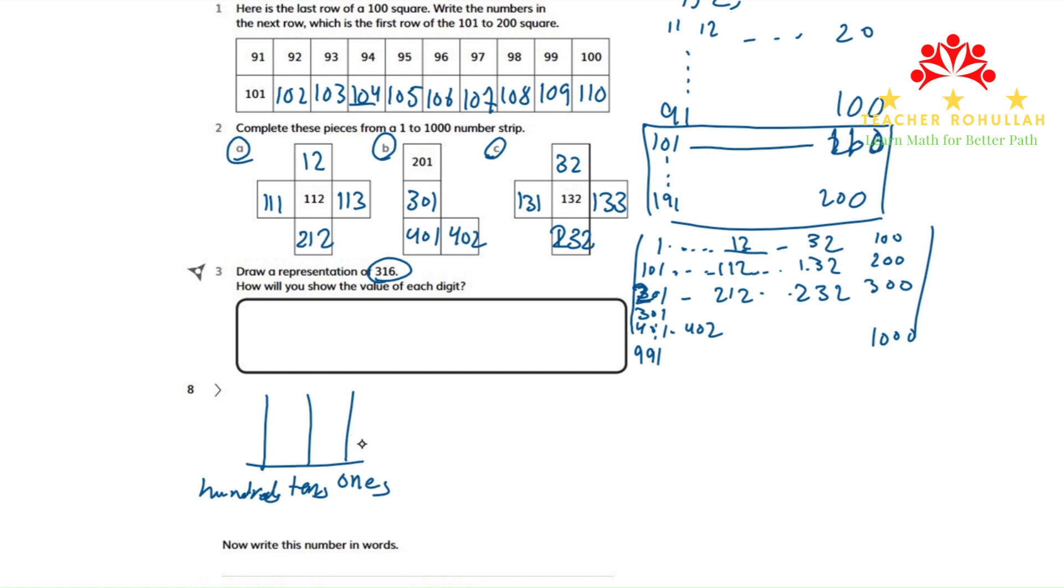Okay, let's start with the ones. What number do we have in the ones place? We have six. So we can draw six beads here. One, two, three, four, five, and six.